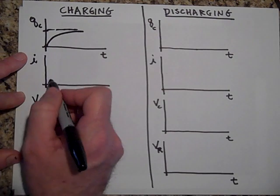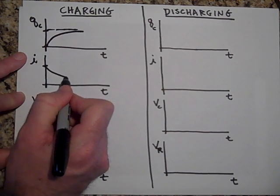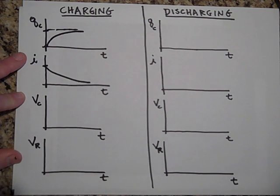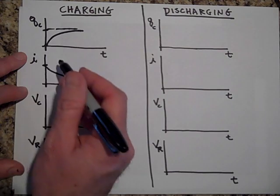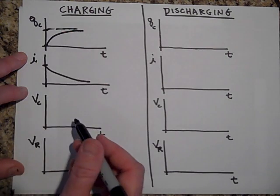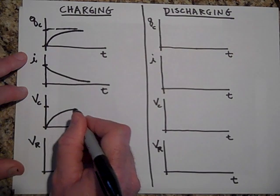But the current in the resistor is actually decreasing as time goes by. The voltage across the capacitor, if the charge is building, it should match that because it's Q over C, the voltage, and so it does, it builds.